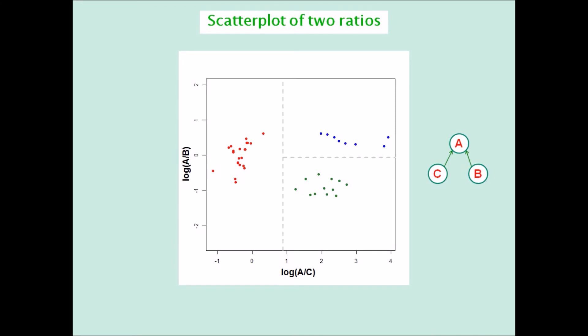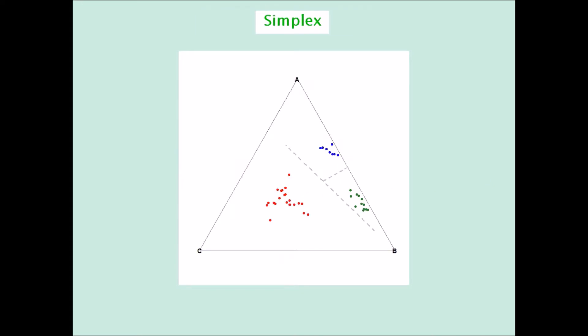This is the simplex version of the same trivariate data, showing the same separating lines. And finally, the log ratio biplot version, which is oriented to principal axes.